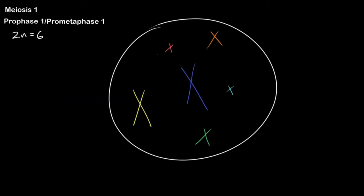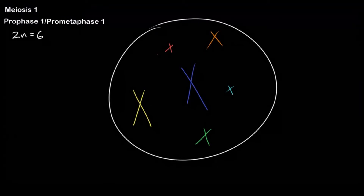At the end of meiosis 1, our ploidy will be n, because at the end of meiosis 1 we're going to split our homologous pairs into two different cells. Our cells become haploid by the end of meiosis 1. Another term for meiosis 1 is 'reduction division' — meiosis 1 is responsible for making our cells go from diploid to haploid.